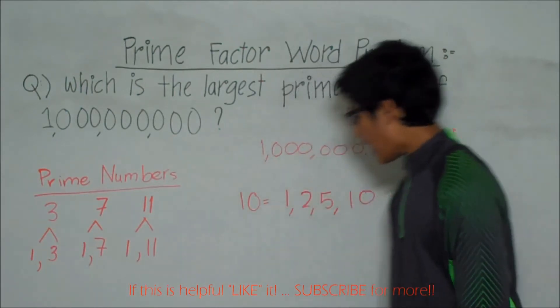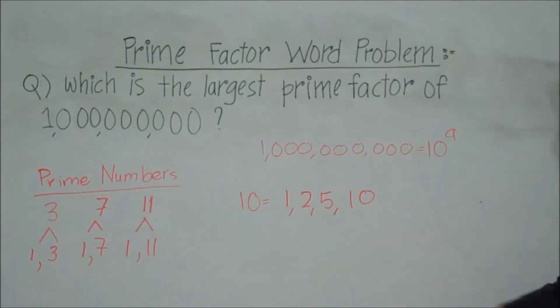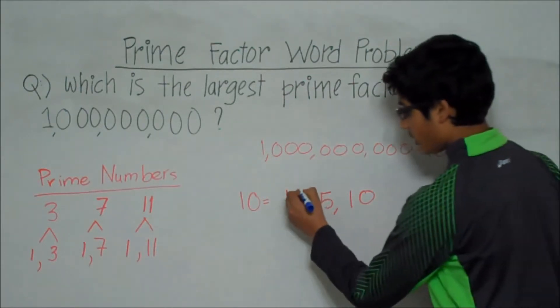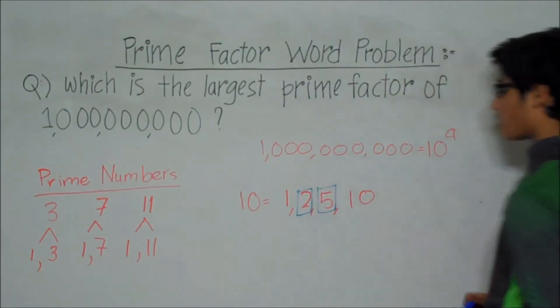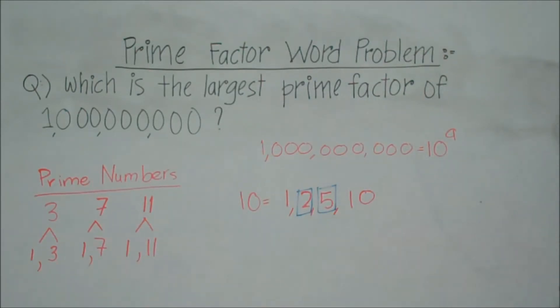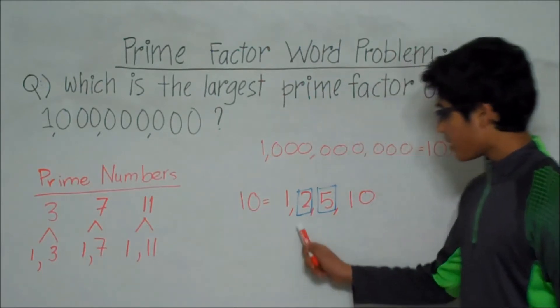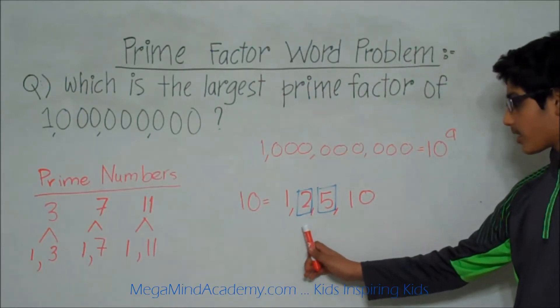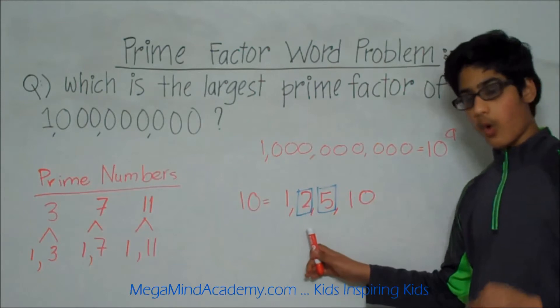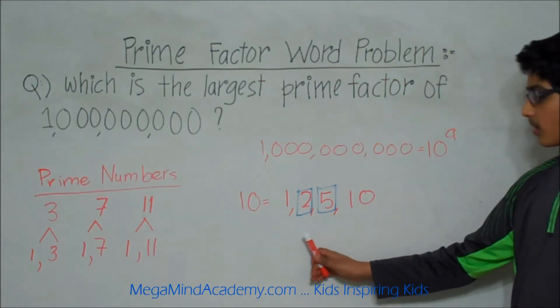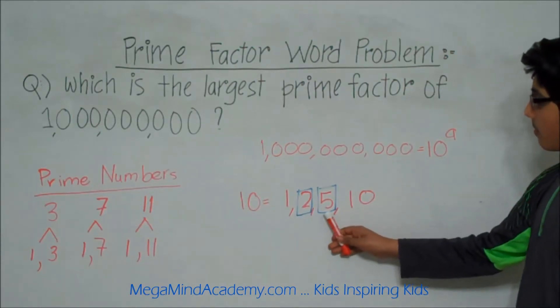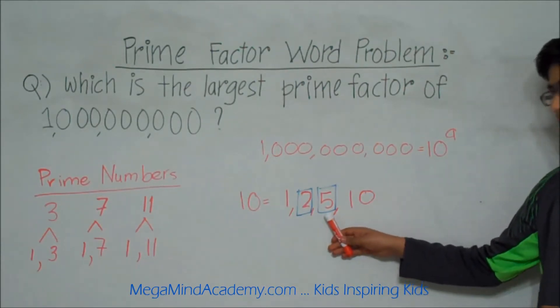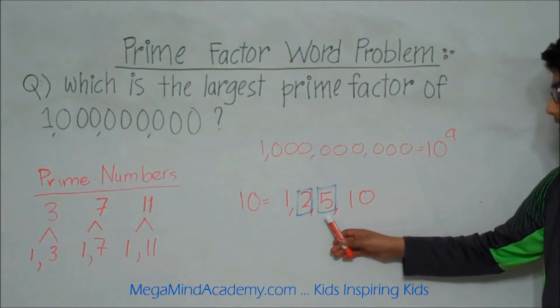Out of these numbers, there are only two numbers that are prime numbers. They are 2 and 5. 2 is a prime number because the only factors of 2 are 1 and 2. And 5 is also a prime number because the only factors of 5 are 1 and 5.